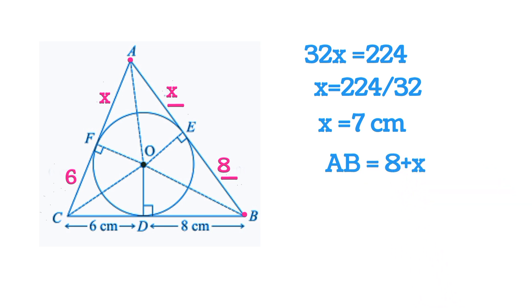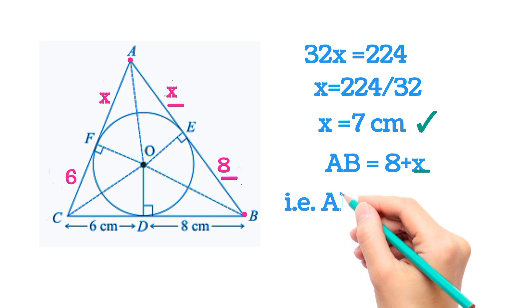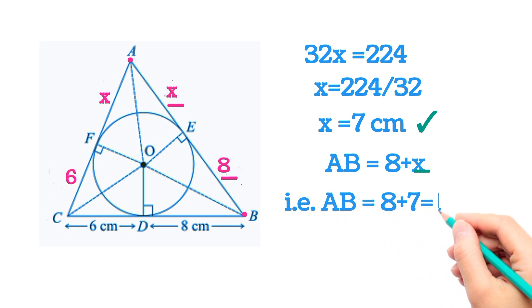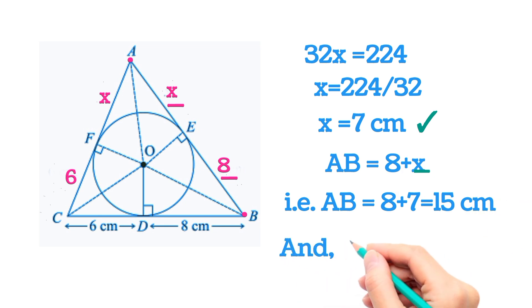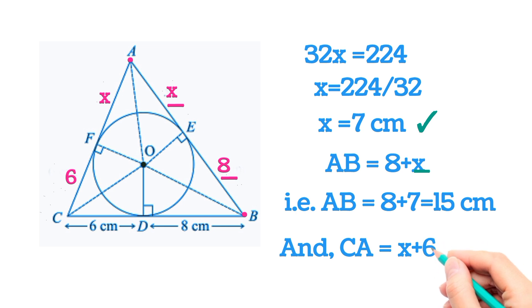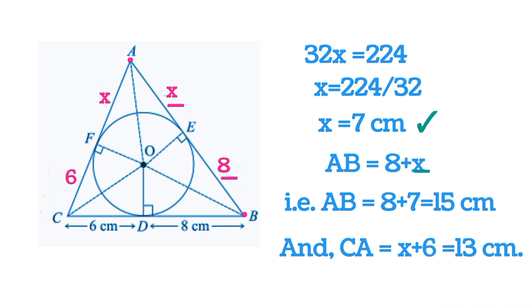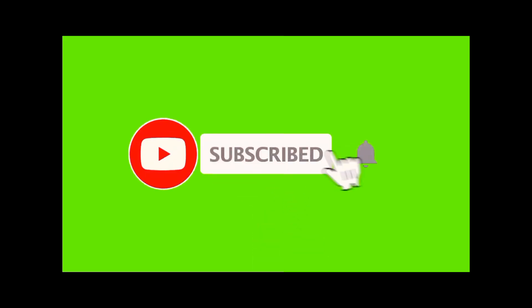Now AB = 8 + x = 8 + 7 = 15 centimeters. Similarly, CA = x + 6 = 7 + 6 = 13 centimeters. That was the question. I hope you enjoyed the video. If you have any doubts, write them in the comment section, and please subscribe to my channel for more such interesting questions. Thanks for watching!